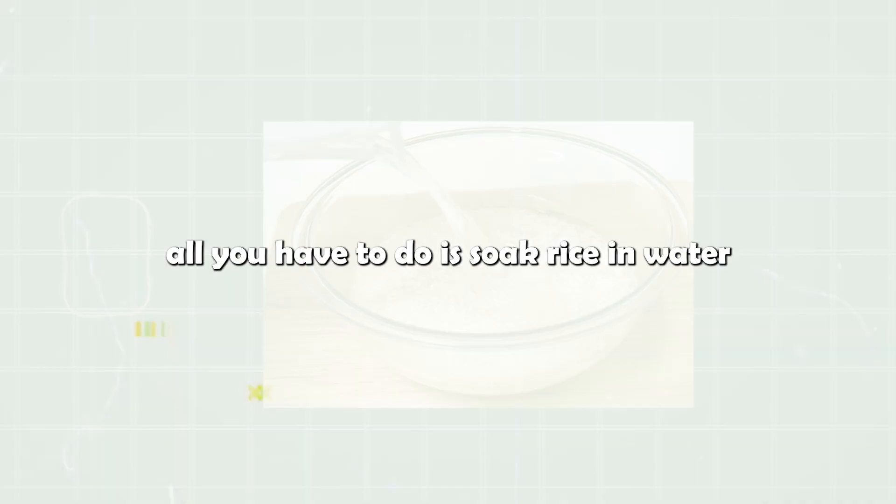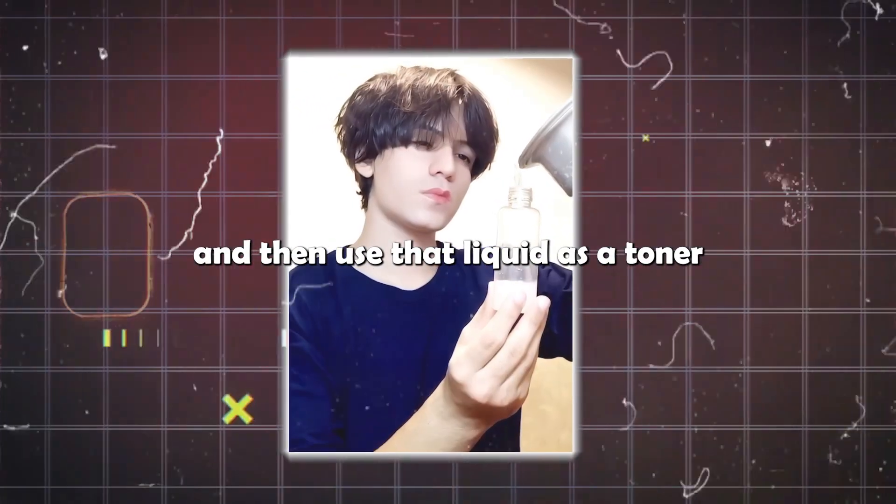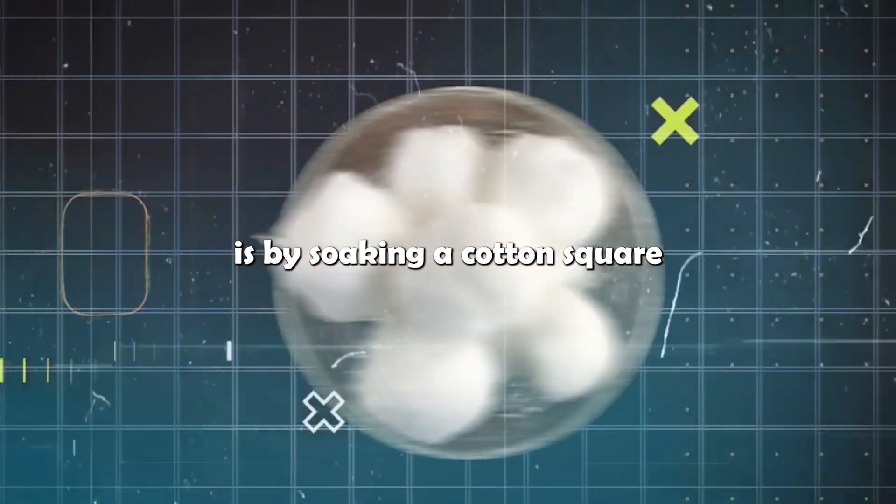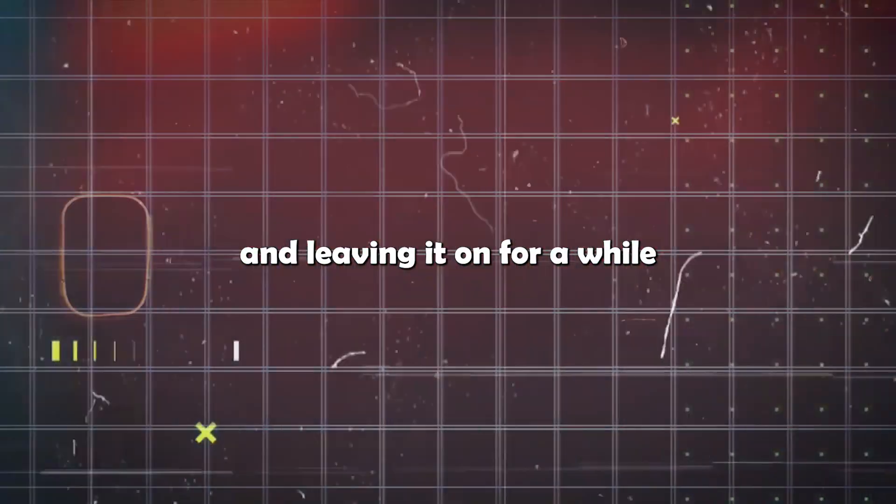Basically, all you have to do is soak rice in water for 20 to 30 minutes, strain out that water, and then use that liquid as a toner. The best way to apply this is by soaking a cotton square or cotton round in it and then slapping it onto a clean face and leaving it on for a while.